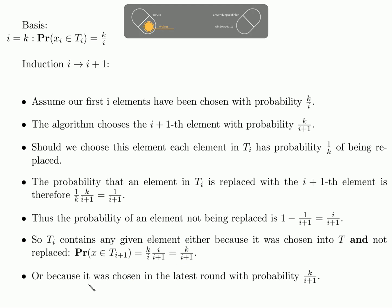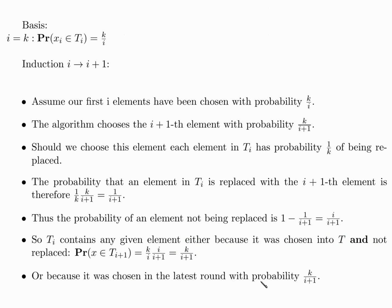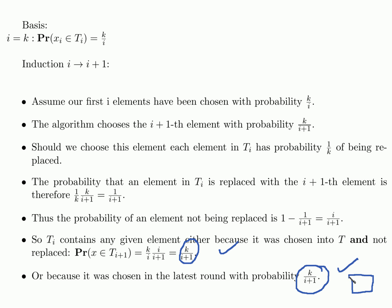We have shown that in the i plus 1 time step, every item that already has been in our sample is in our new sample with equal probability. And because it was chosen in the latest round with probability k over i plus 1, our new item is also in the new sample t_{i+1} with probability k over i plus 1, just like all the other items we have looked at before. So indeed, every item is in our new sample with probability k over i plus 1, and this is exactly what we wanted to show.